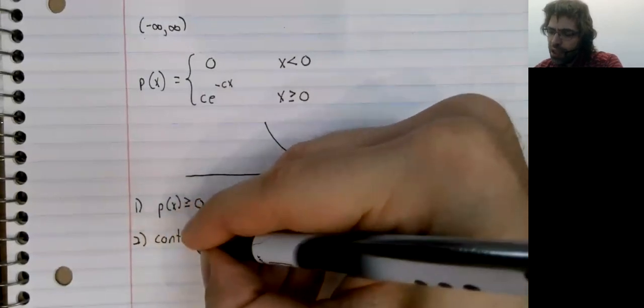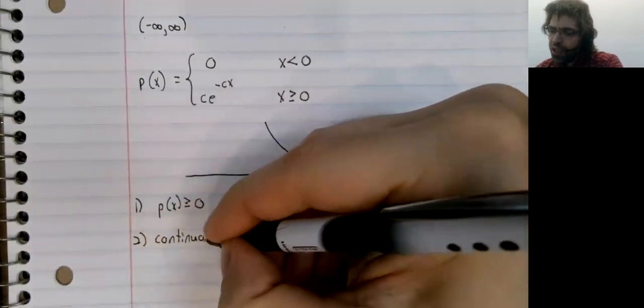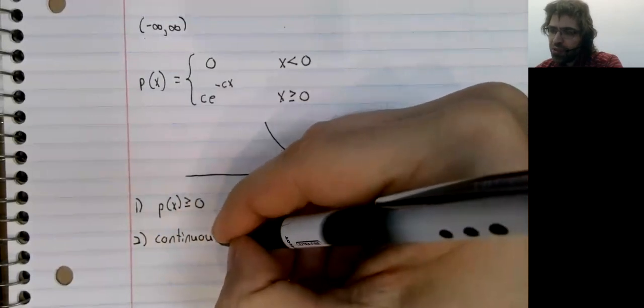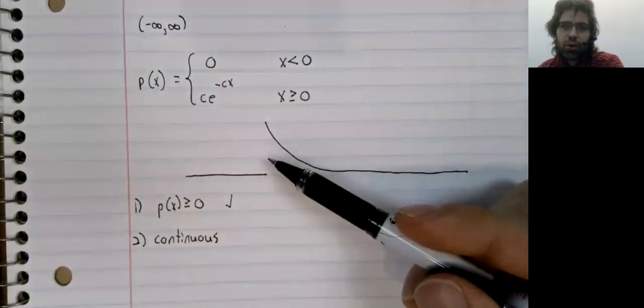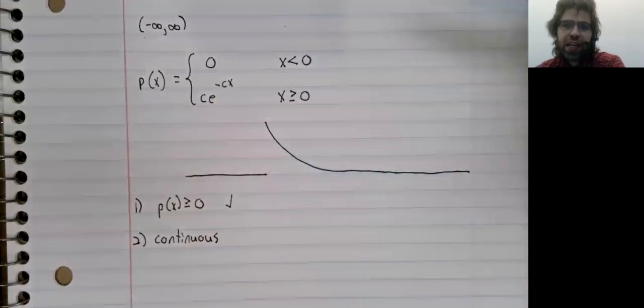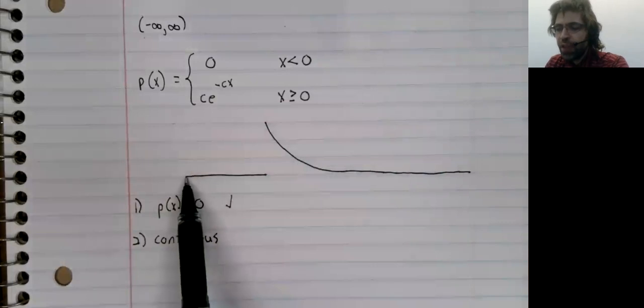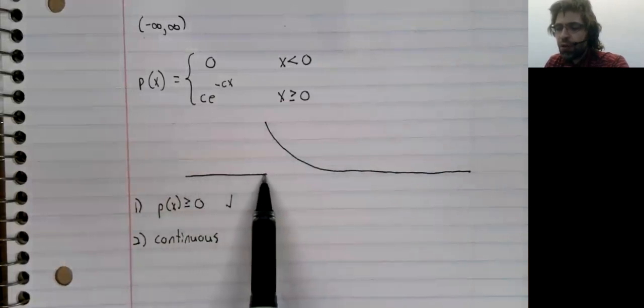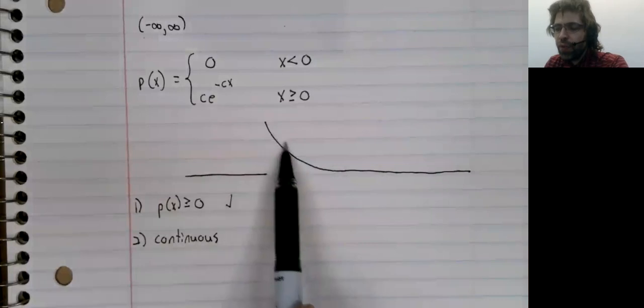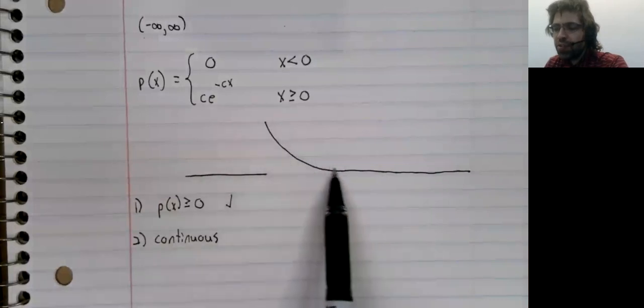We need it to be continuous, except perhaps at a finite number of values. Well, we're continuous here, we're continuous here.